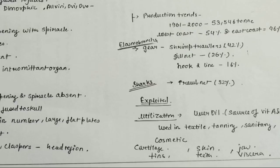The Elasmobranchii gear - shrimp trawlers contribute approximately 42%, gill net 26%, hook and line 16%. For sharks, trawling is mainly used and trawling contributes 32%.